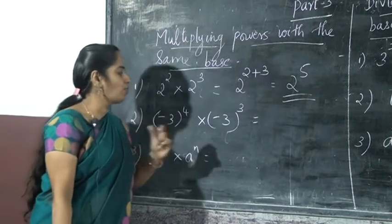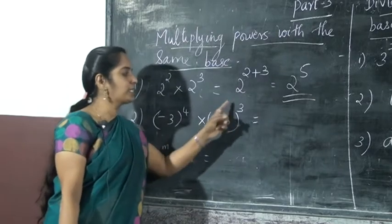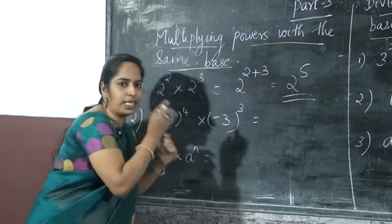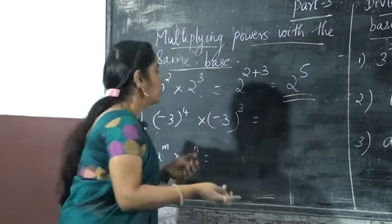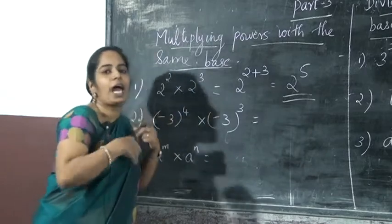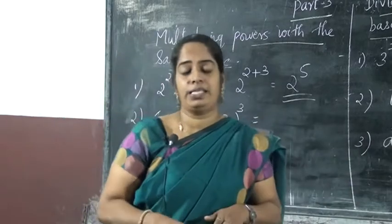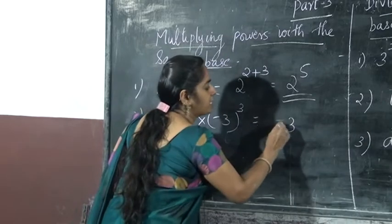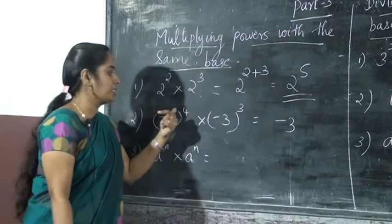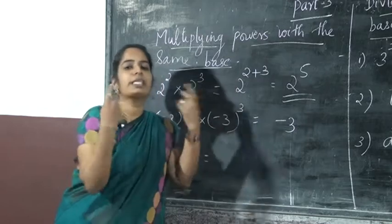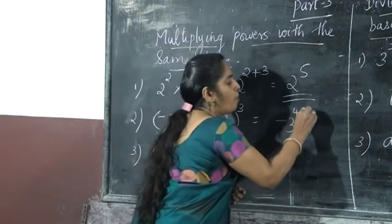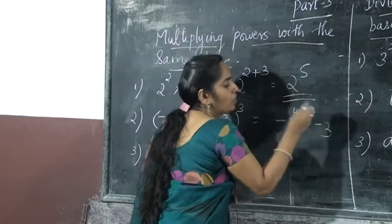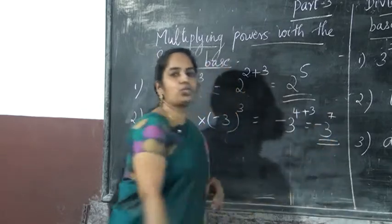The next is minus 3 raise to 4 into minus 3 raise to 3. Here the base is the same, that is minus 3. Powers are different there. So how will you add? We must add the powers because the same base is there. If the base is the same, we write the same base, that is minus 3, and the powers are 4 and 3. So we must add the powers: 4 plus 3, that is equal to minus 3 raise to 7.